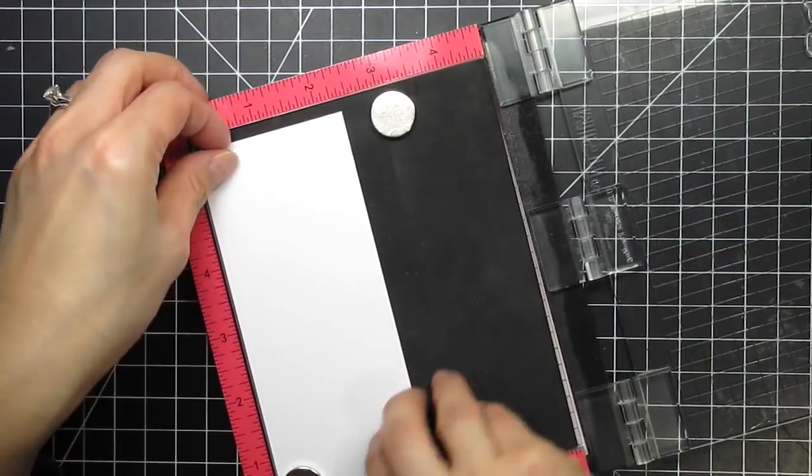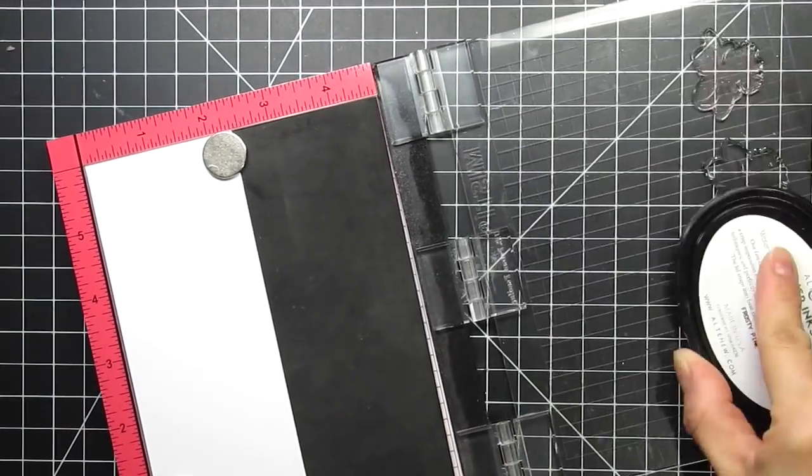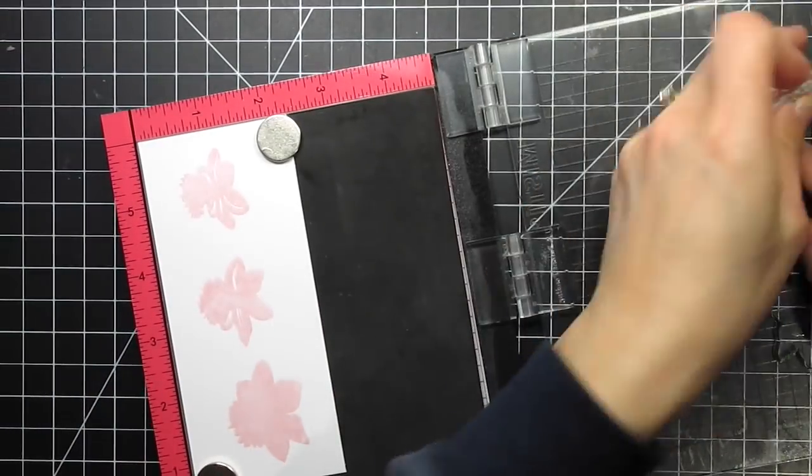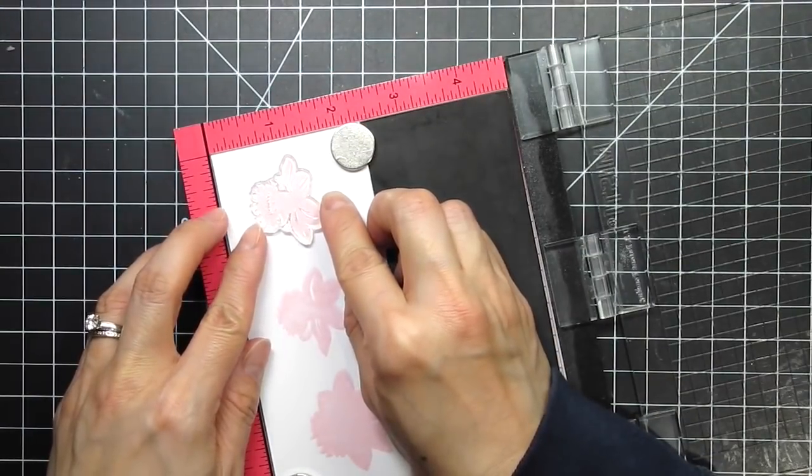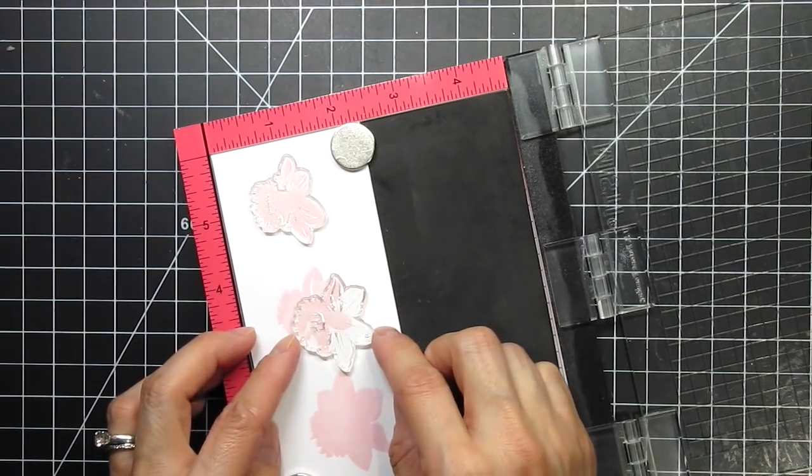I lined up the A stamps and prepared to stamp with the lightest of the three shades of pink. I'll be using Altenew inks and the first color is Frosty Pink.